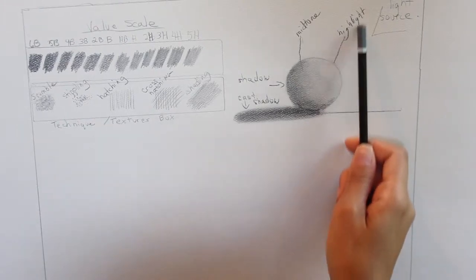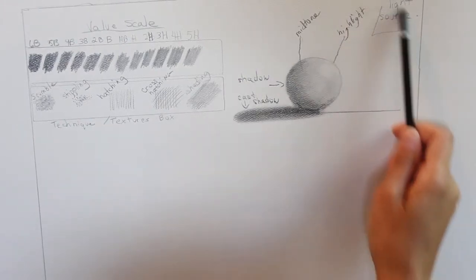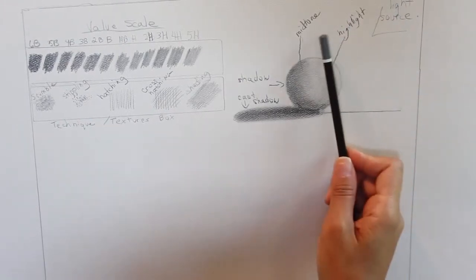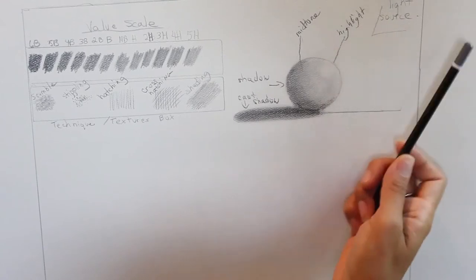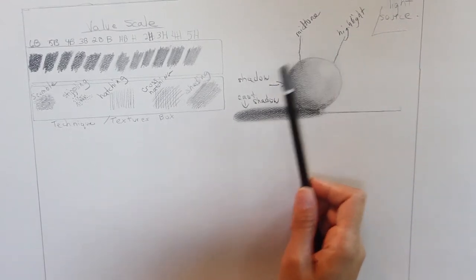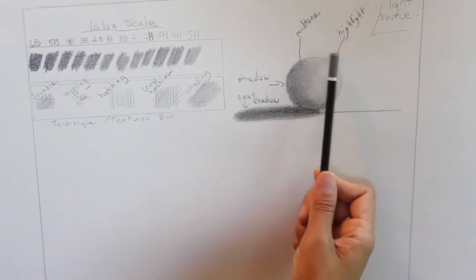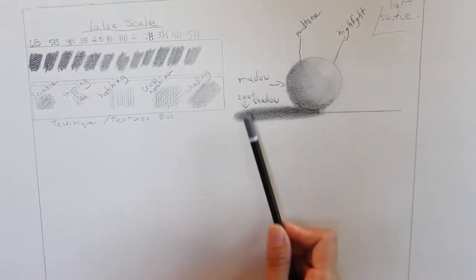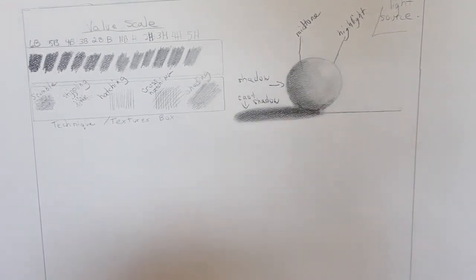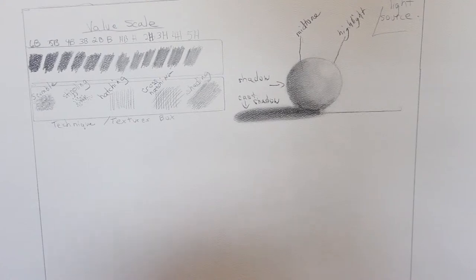Remember to incorporate all of these things into your drawings — your mid-tone, your highlight. Look for these things in nature, in the world. When you're talking to people you'll notice that everyone has a highlight, a mid-tone, a shadow, and a cast shadow. Play with the light, play with your value scale, and practice. It's going to be a real eye-opener.